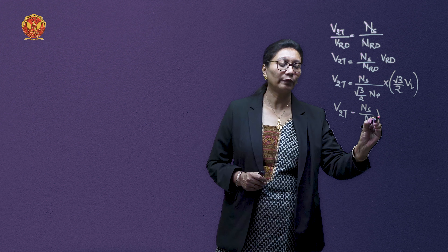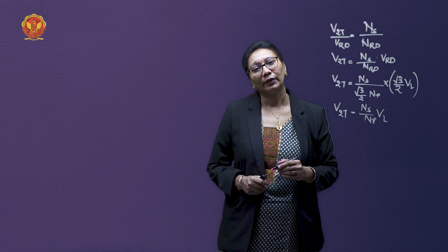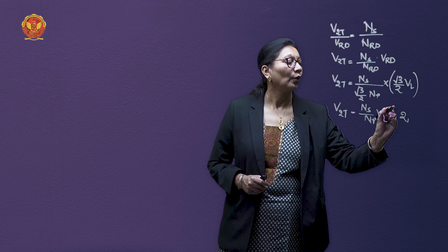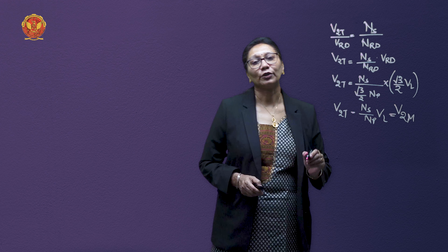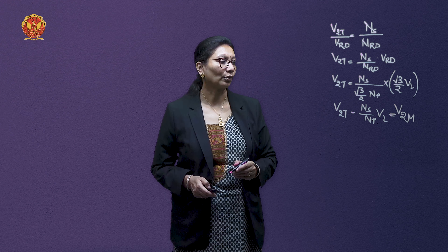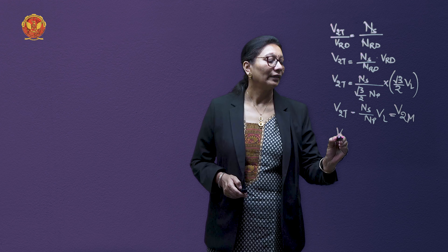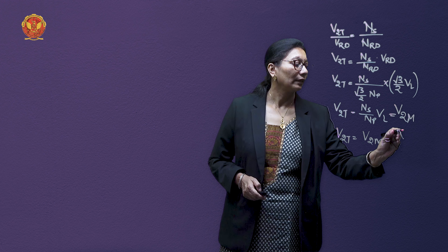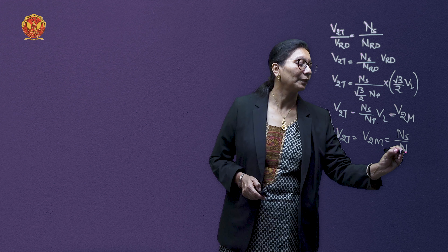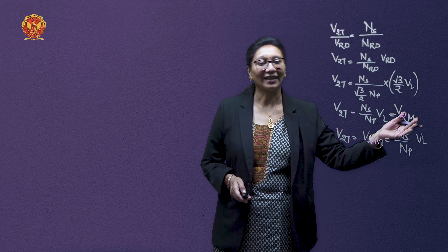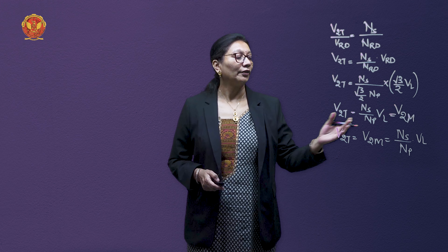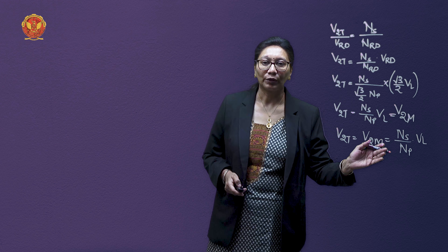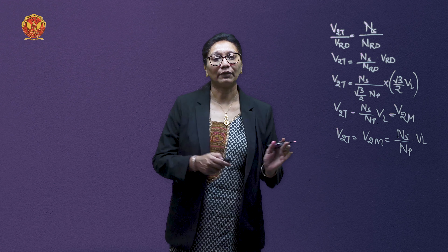From this, V2T = (NS/NP) × VL equals the transformation ratio times the line voltage. This secondary voltage of the teaser transformer is also equal to the secondary voltage of the main transformer. Therefore, both the teaser transformer secondary voltage and the main transformer secondary voltage equal the transformation ratio multiplied by the line voltage.